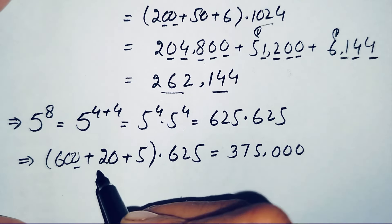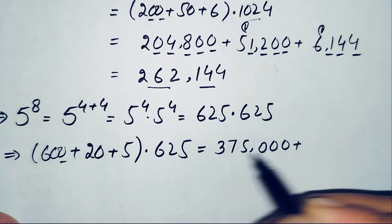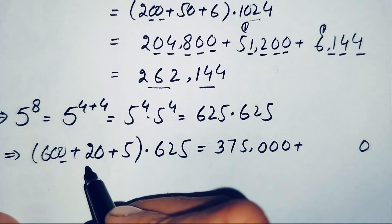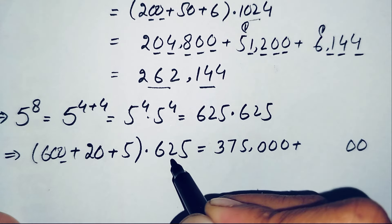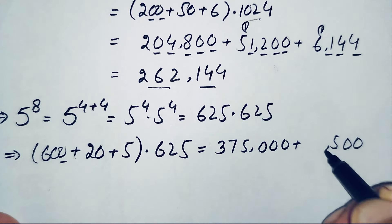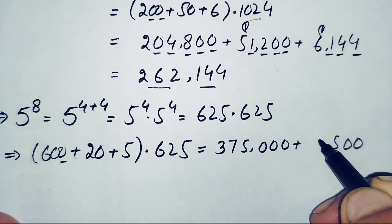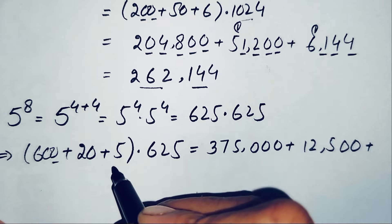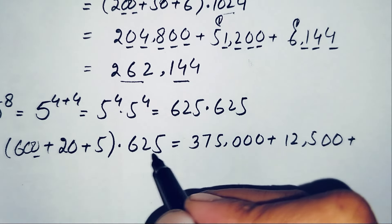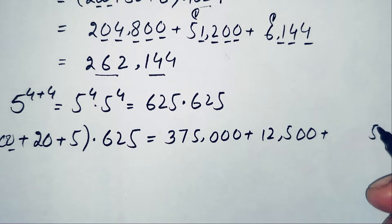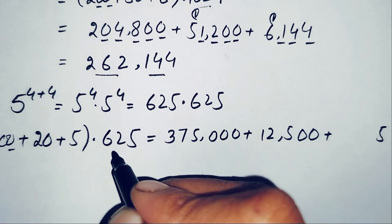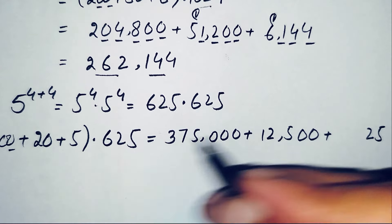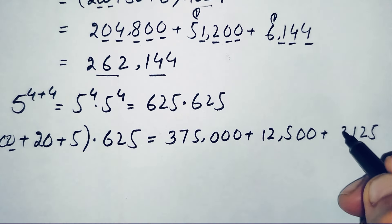Now multiply 625 by 20: 625×0=0, then 625×2: 2×5=10 (write 0, carry 1), 2×2=4 plus 1 is 5, 2×6=12. This gives 12,500. Then multiply 625 by 5: 5×5=25 (write 5, carry 2), 5×2=10 plus 2 is 12 (write 2, carry 1), 5×6=30 plus 1 is 31. This gives 3,125.